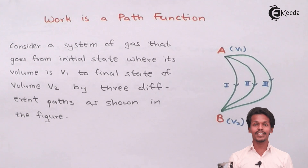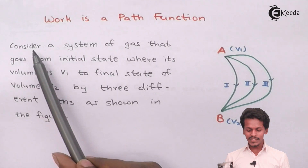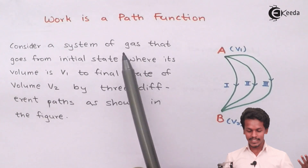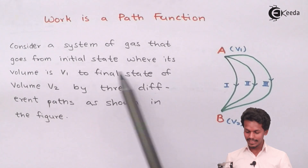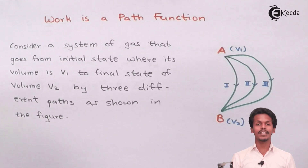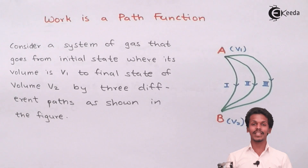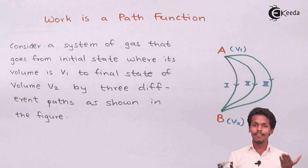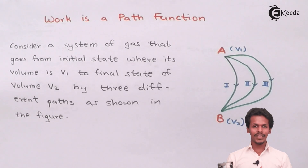So now we are going to discuss how work is a path function. For that, let us consider a system of a gas — the same setup from our earlier lectures — where the system goes from an initial state with volume V1 to a final state with volume V2. To reach from V1 to V2, there are different paths or different conditions, and because of that, the work done during expansion depends on both pressure and volume.